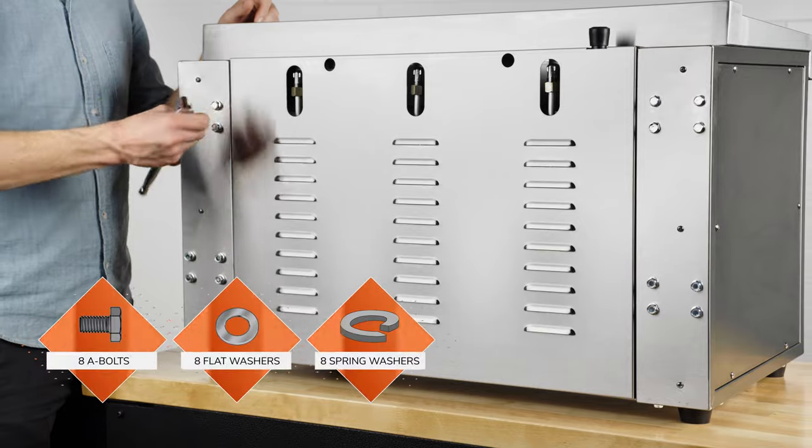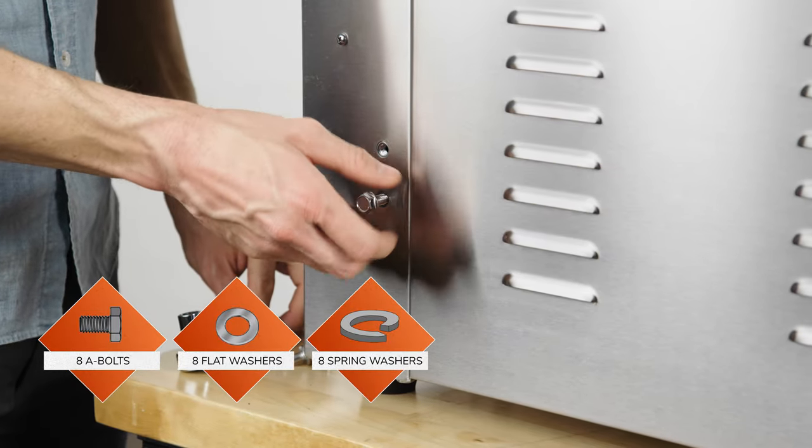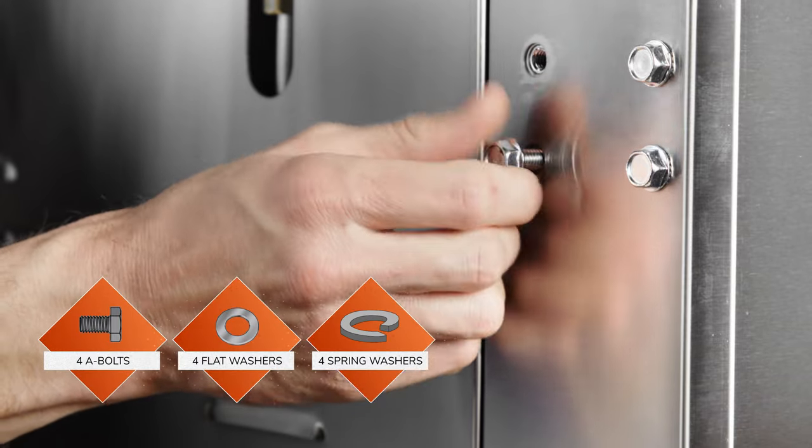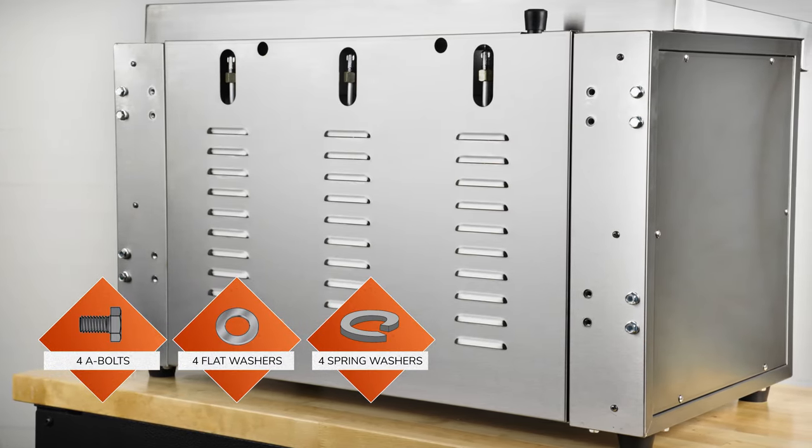Remove eight A-bolts, eight flat washers, and eight spring washers from the back of the Salamander. Keep four A-bolts, four flat washers, and four spring washers to use during the next step.